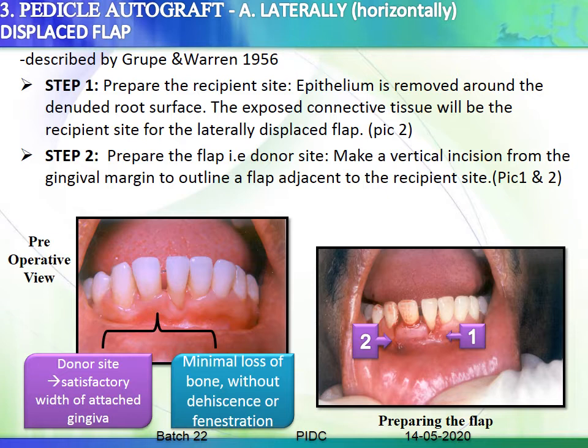Step two is to prepare the donor flap: make vertical incisions from the gingival margin to outline a flap adjacent to the recipient site. The donor site selected must always have a satisfactory width of attached gingiva and there should be minimal bone loss without dehiscence or fenestration. Only if these two criteria are met should you proceed with the pedicle autograft; otherwise, use the free gingival or free connective tissue autograft techniques.